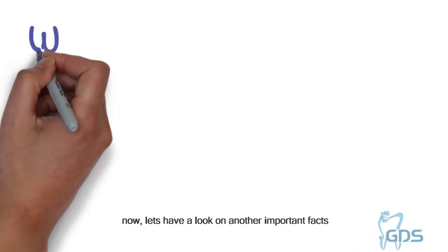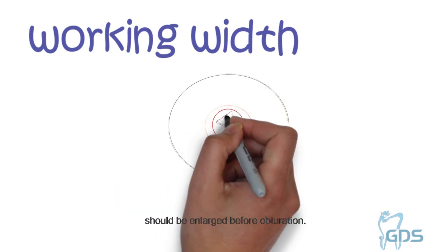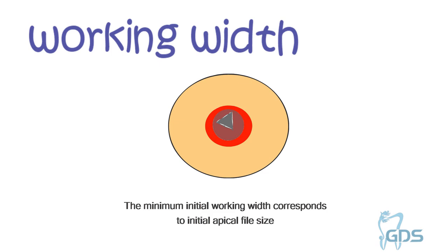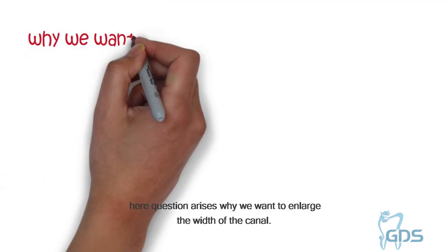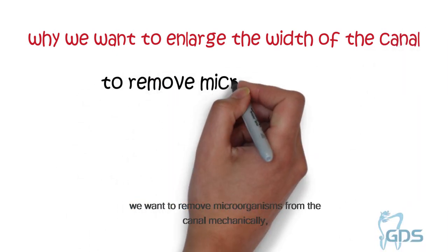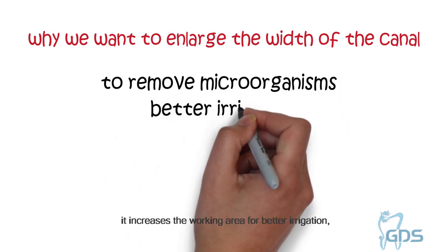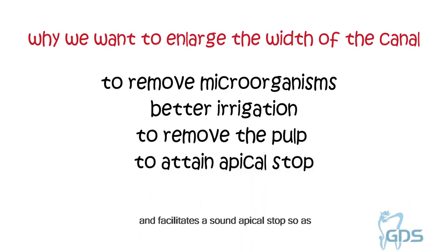Now let's have a look at another important and sometimes forgotten factor for proper cleaning and shaping — that is working width. It means how much the apical end should be enlarged before obturation. The minimum initial working width corresponds to the initial apical file size which binds at working length. The maximum final working width corresponds to the master apical file size. We want to enlarge the width of the canal to remove microorganisms mechanically, increase the working area for better irrigation, remove the pulp tissue completely, and facilitate a sound apical stop so as to achieve a three-dimensional seal.